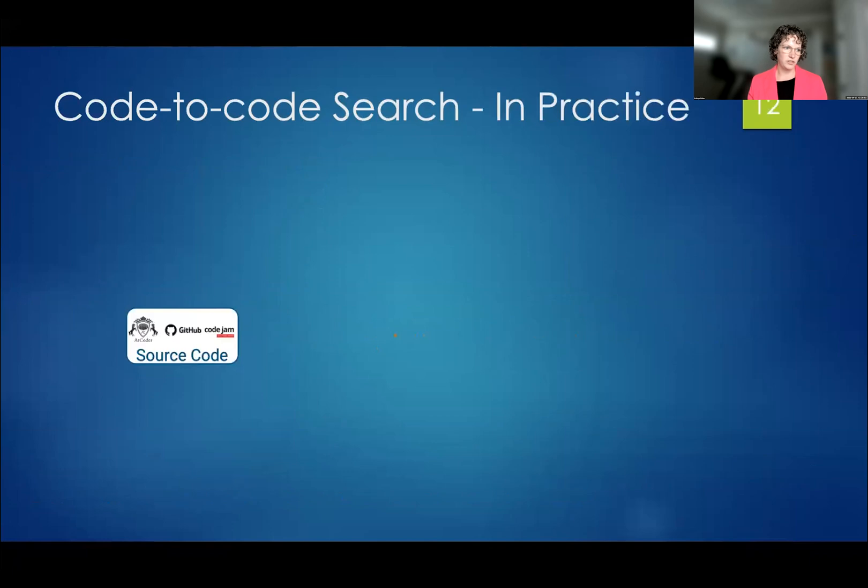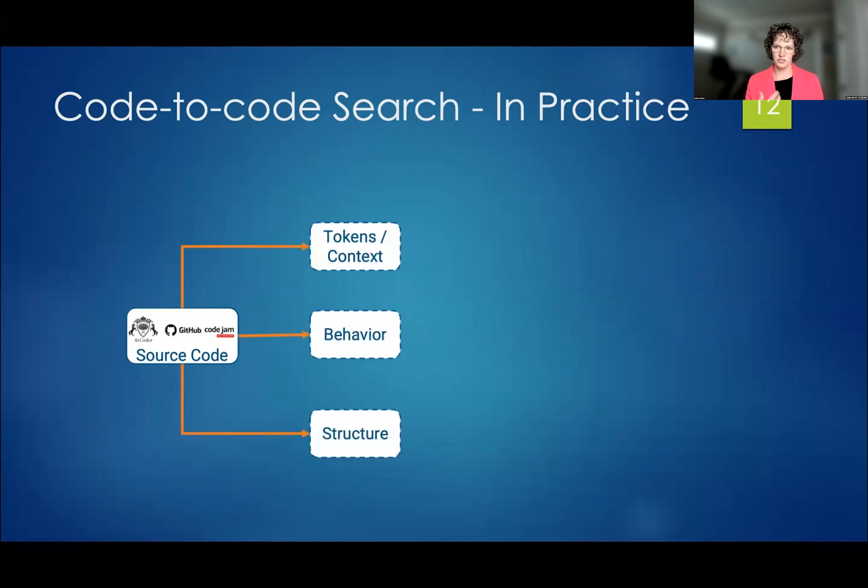What we did was we took source code and we indexed it using three different dimensions to create a multidimensional similarity analysis. We used tokens or context because people can write code with any variable name that they want, but it turns out they tend to do it in a pretty natural way. And we can use that information. We took behavior using fuzzing. And we took structure using a language agnostic AST, abstract syntax tree.